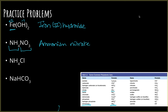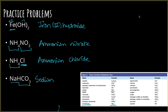The next one is an example where you have an element at the end but a polyatomic at the beginning. This one is ammonium, and then Cl — if it's just an element by itself, we name it with the -ide ending just like we've been doing. So that would be called ammonium chloride. And then the last one: sodium is a single charge metal, and HCO3 is kind of special because it has two possible names — you could call this sodium hydrogen carbonate, or you could call it sodium bicarbonate. Either would be acceptable.